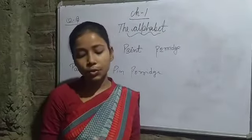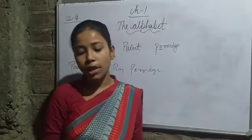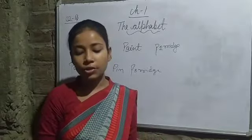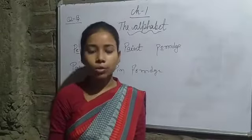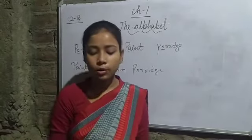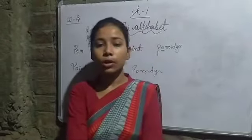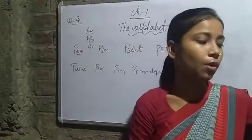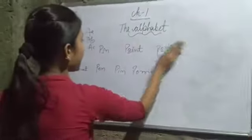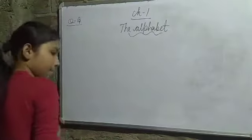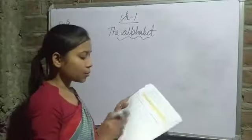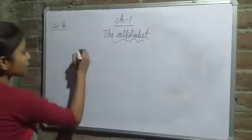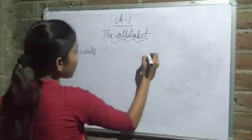Now we have more exercises to solve - arrange these words in alphabetical order. One has been done for you. You have to arrange these by your own, I will not solve for you. You are from standard two, you are not a child anymore, so solve these by yourself. Now we have a new topic: vowels and consonants.